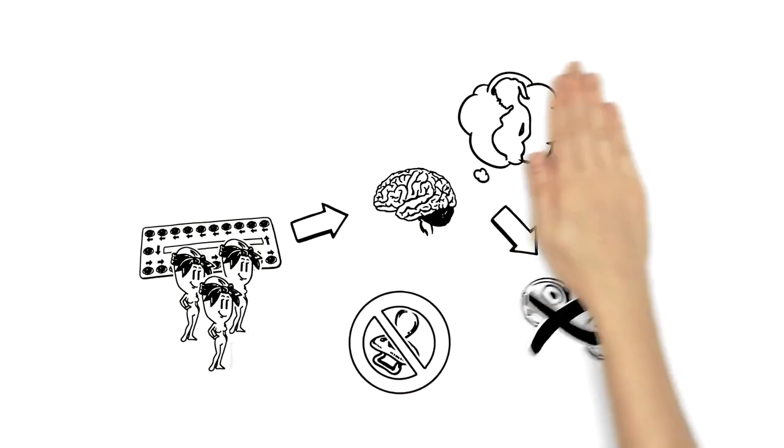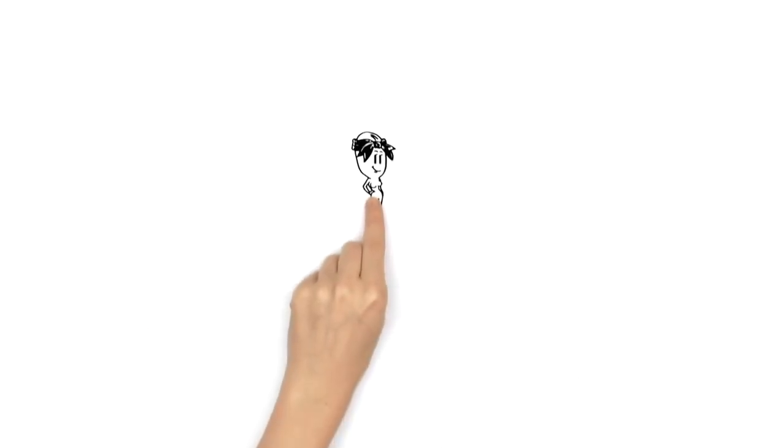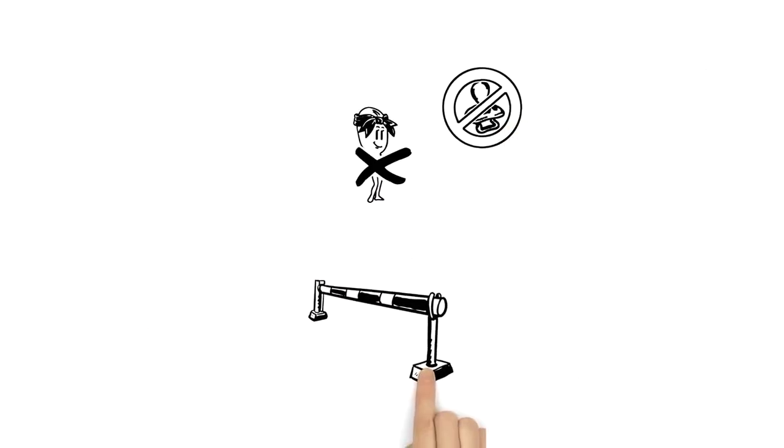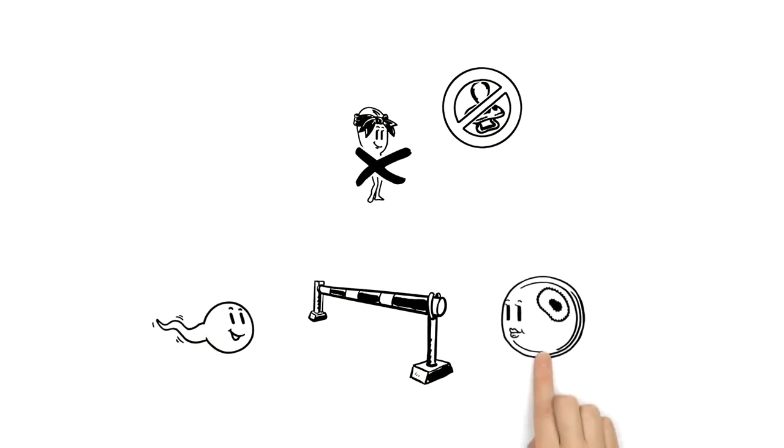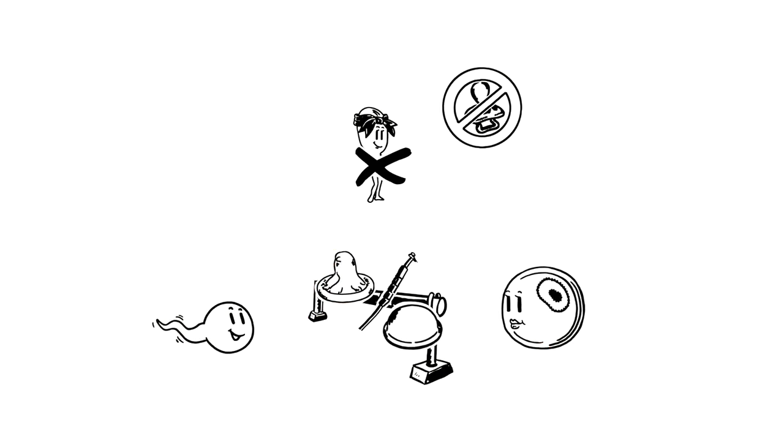But there are also contraceptives that work without hormones. They prevent a pregnancy by stopping the sperm on its way to the egg cell. Condoms, copper coils and the diaphragm work in this way.